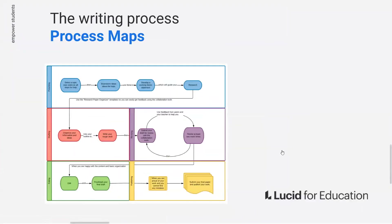Here's an example of a process map. In this template, we are making complex information easier to conceptualize. Students can more easily visualize the abstract writing process, which enables them to work within that process to better communicate their ideas.